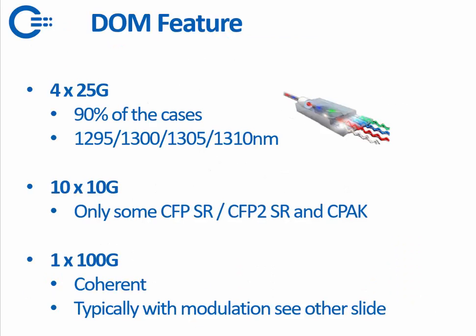The technique behind 100 gig optics — typically they work with four lanes of 25 gig. This is in 90% of the cases. So with, for example, an LR optic where you have an LC patch on the front, you have four light signals which are muxed together inside the optic and then you have the LC patch. The same goes for the receiving side — it's split out into four receivers. Another technique is 10 times 10, done with the older platforms such as the CFP-SR, CFP2-SR, and also in the CPAC.